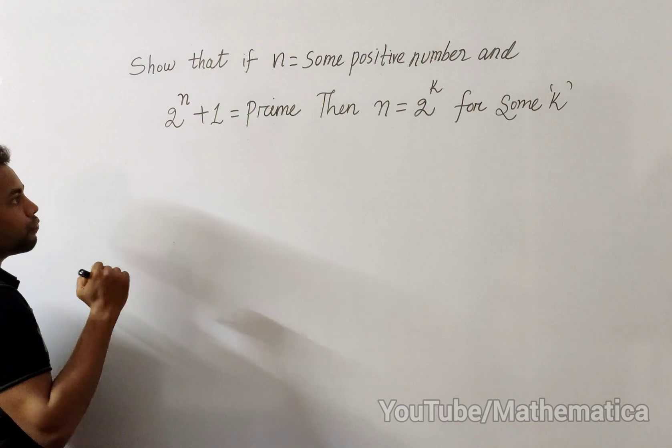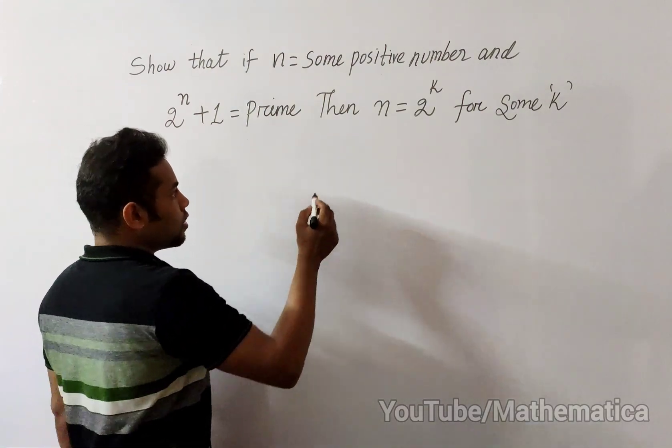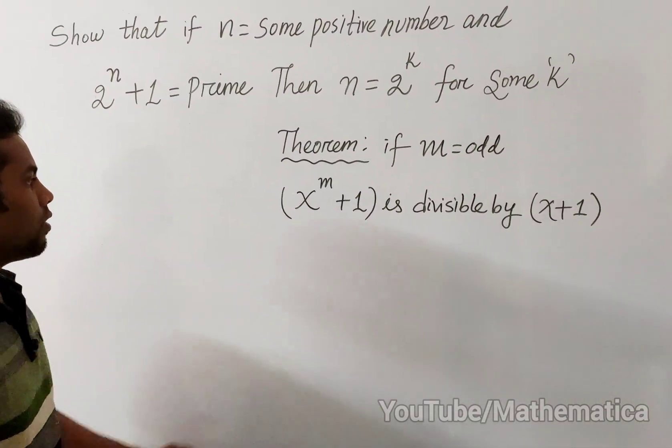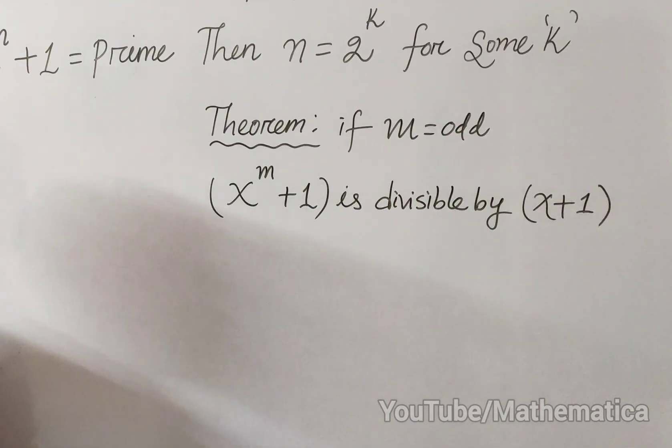Before proving this, we should know one result which says that if m is odd, then x^m + 1 is always divisible by x + 1.